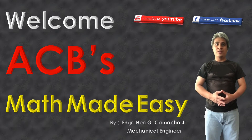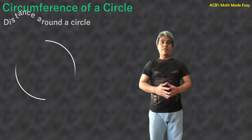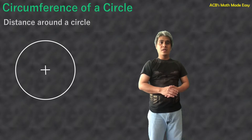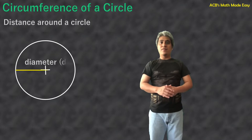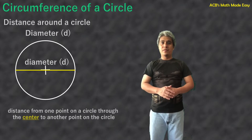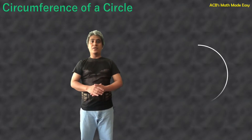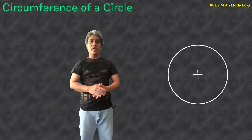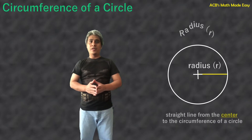What is the meaning of circumference? Circumference is the distance around the circle. This is the center of the circle. The distance from one point to another point passing through the center of the circle is called diameter. We will identify what is the meaning of radius. Radius is a straight line from the center of the circle to the circumference of the circle.